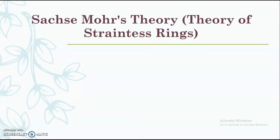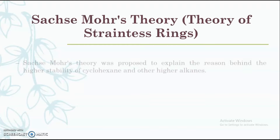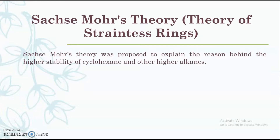The next theory we are going to discuss is the Saxe-Mohar theory, which particularly explains the stability and reactivity of cyclohexane. One limitation of Bayer's strain theory was that according to Bayer, cyclohexane molecules are unstable and do not exist due to negative strain — but practically, cyclohexane and higher molecules do exist and are quite stable compared to cyclopropane, cyclobutane, and cyclopentane. Saxe-Mohar theory exclusively explains why cyclohexane and other higher molecules are stable, and that is why this theory is also known as the theory of strainless rings.